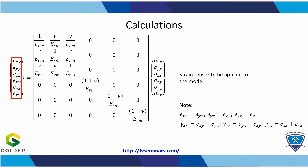Here we have the relationship between the stresses and the strains given the stiffness of the medium, which is represented by the stiffness matrix shown here. Basically you need two elastic parameters to define this matrix. Notice that we have six components of the strains and the stress, but in actuality there are nine components. Be aware that the xy and yx components are equal in magnitude but they come in pairs, so we need to address all nine components when we define the deformations that we're going to apply to our model.